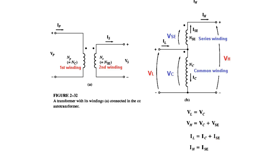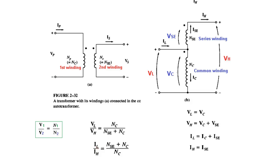For currents: the load current IL divides into two paths, so IL = IC + ISE. Also, IH equals ISE — they are the same current. For a general transformer the voltage ratio V1/V2 = N1/N2. Applying this, VL/VH = NC / (NSE + NC). For current, the ratio reverses: IL/IH = (NSE + NC) / NC.